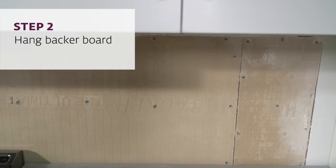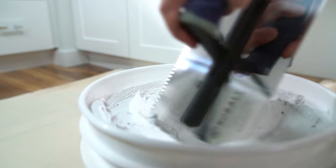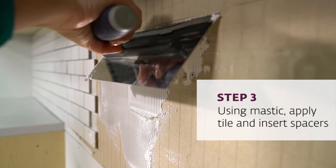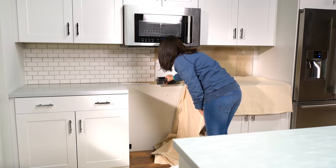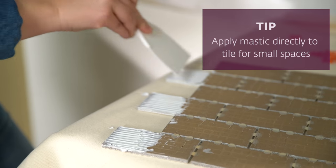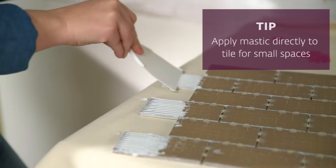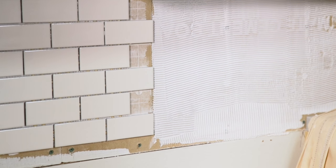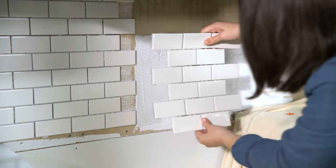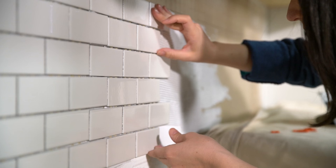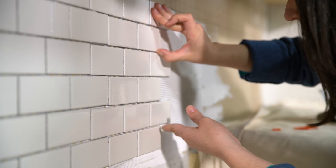I started by applying a backer board to this space, then using a trowel, applied mastic to the backer board. Here's a tip: use a small trowel to back butter or apply mastic directly to the tile on places you can't get it on the wall. Dry fit it first to make sure the tile fits, and if it does, apply mastic to that area then put the tile into place.